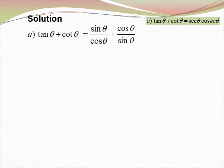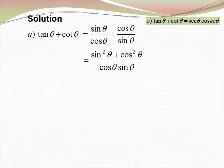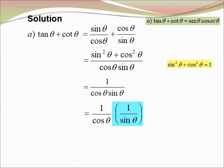Using the identity sin²θ + cos²θ = 1, the numerator becomes 1, so we have 1 over (cos θ sin θ). Separating this gives (1/cos θ) × (1/sin θ). We know that 1/cos θ = sec θ and 1/sin θ = csc θ. Therefore, tan θ + cot θ = sec θ × csc θ, which is proved.